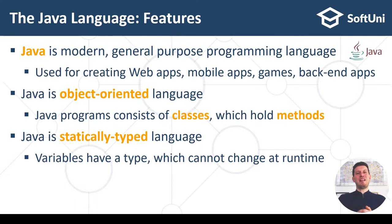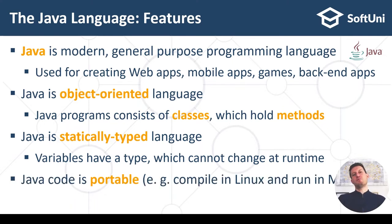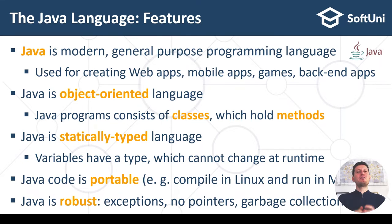Java is also a statically typed language, which means variables have a type declared at compile time that cannot be changed at runtime. For example, if you have int a = 5, you cannot say a = "hello" because the type of a is int and cannot be changed to string at runtime. Java code is portable — you can compile your code in Linux and run it on Mac, or compile in Windows and run on Android. A C++ program compiled on Windows, for example, cannot run on Linux.